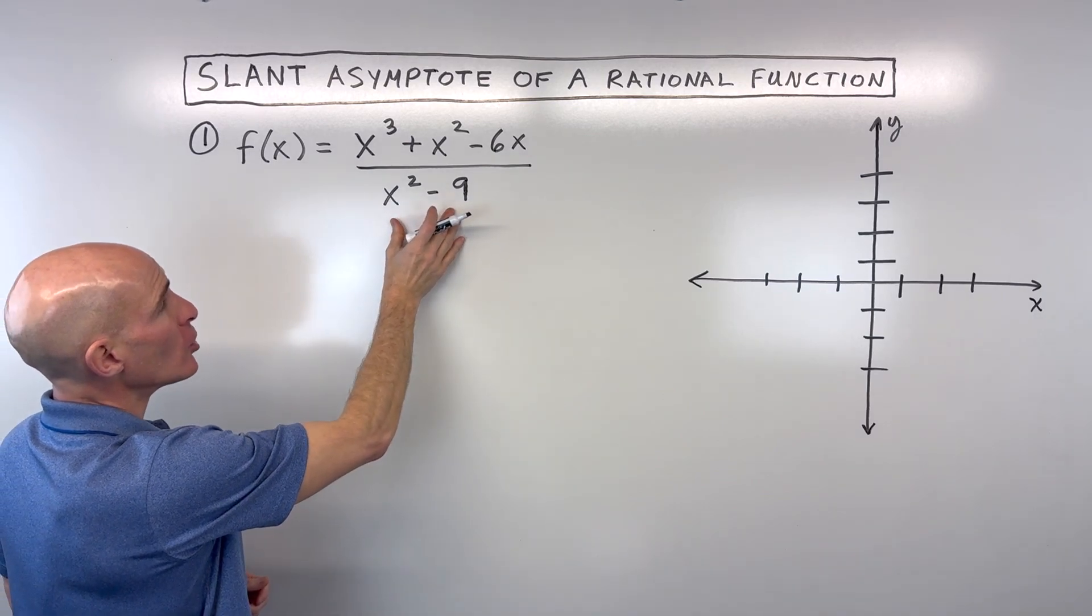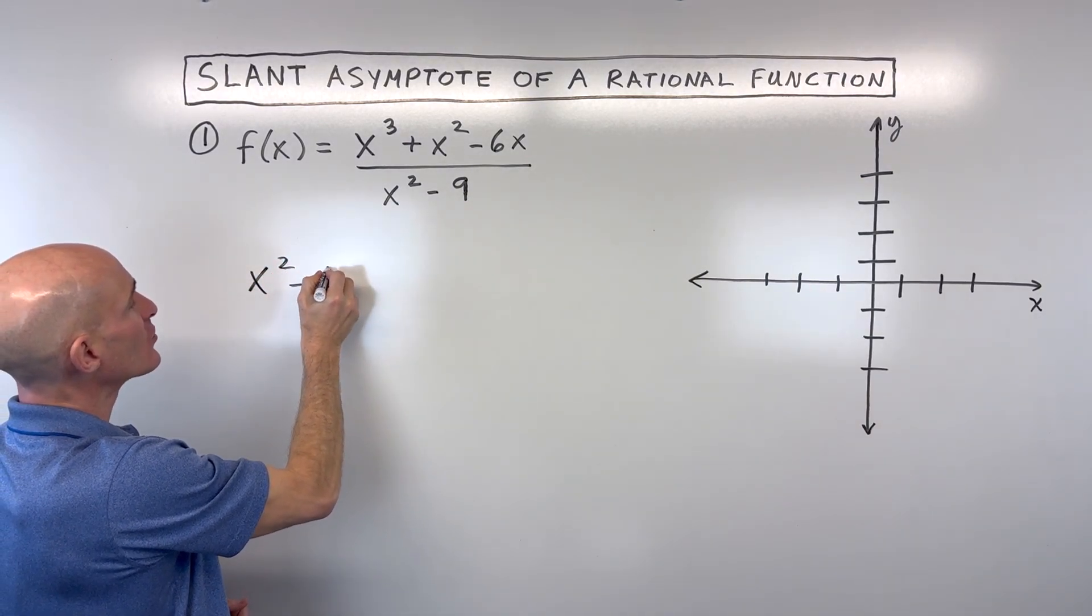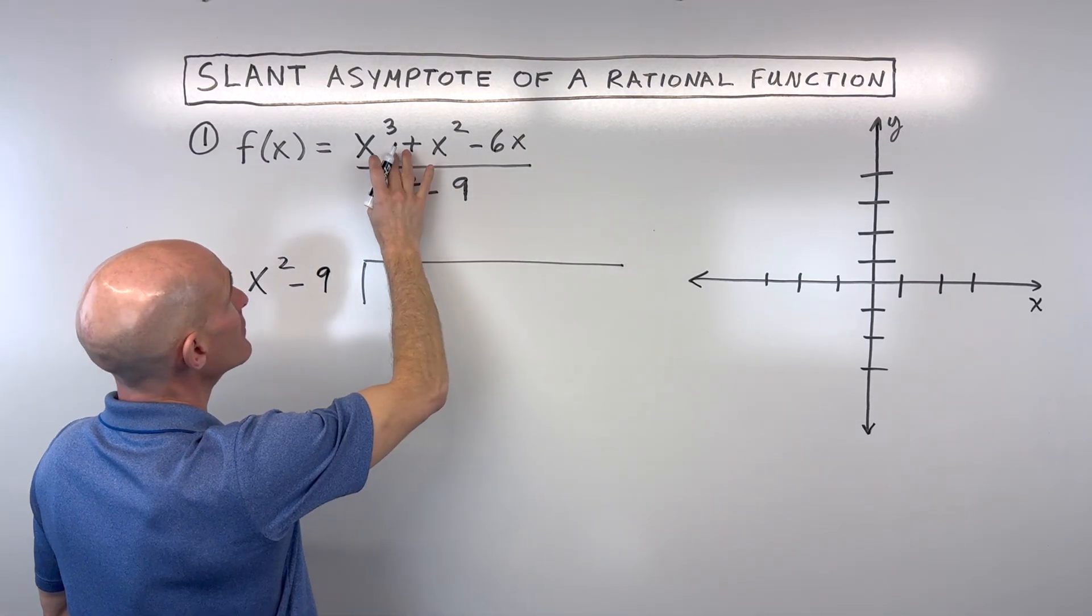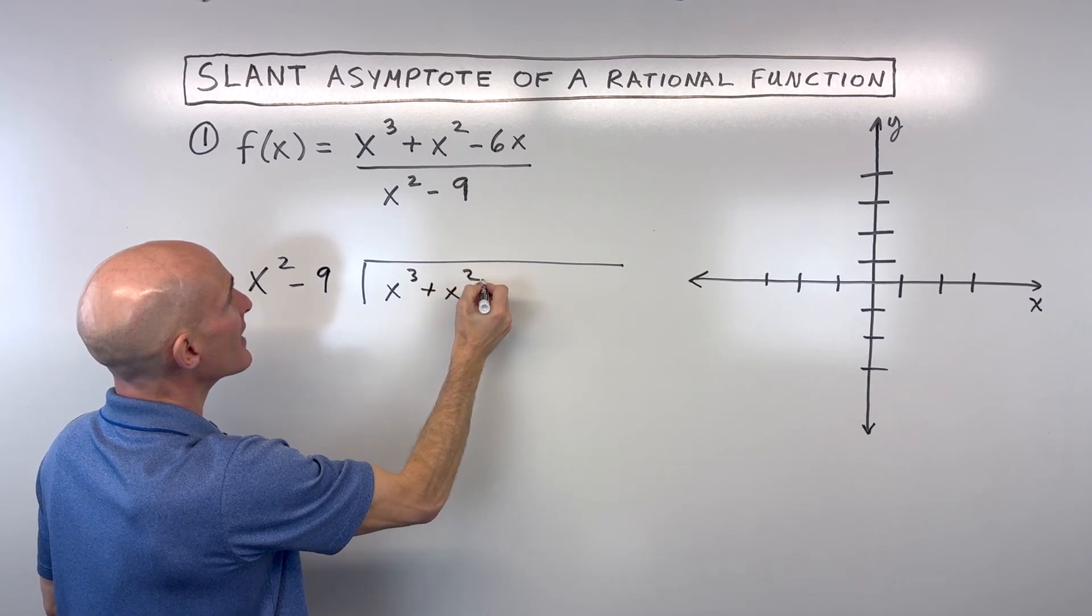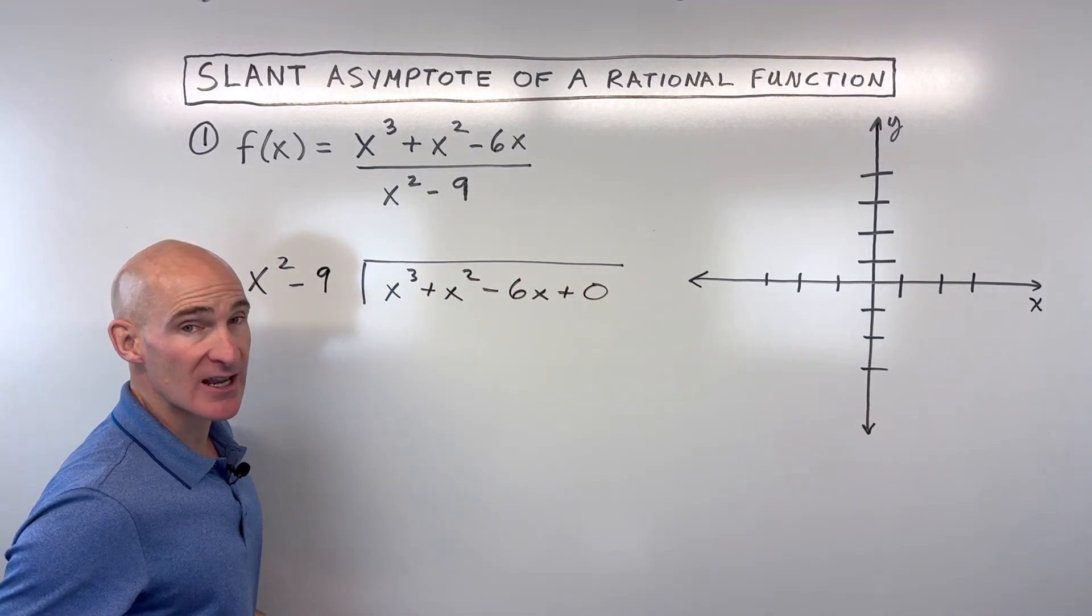Well, we're going to do some long division. So I'm going to say how many times does x squared minus 9 go into the numerator, which is x cubed plus x squared minus 6x. And I'll just say plus 0 since there isn't a constant.